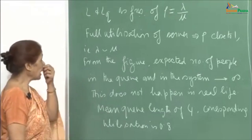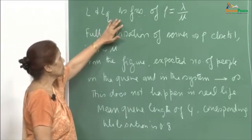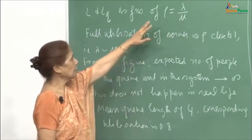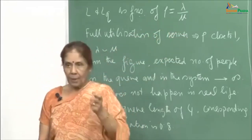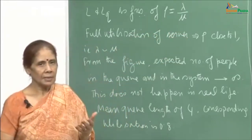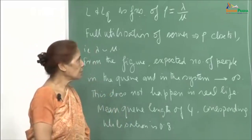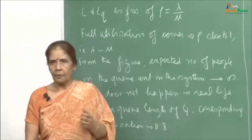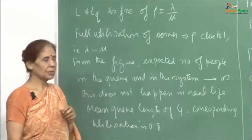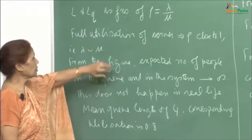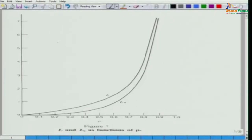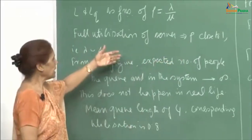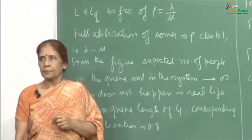Let me continue the discussion about L and L-queue as functions of ρ, which is λ/μ — where λ is the mean arrival rate and μ is the mean service rate. λ/μ denotes the utilization of the queuing system. From the figure on the screen, you can see that as you approach full utilization of the server — that is, if ρ is close to 1 — the graphs for both L and L-queue are going to infinity.